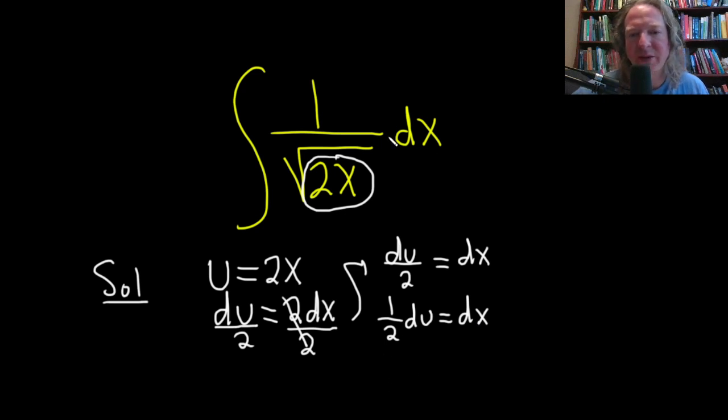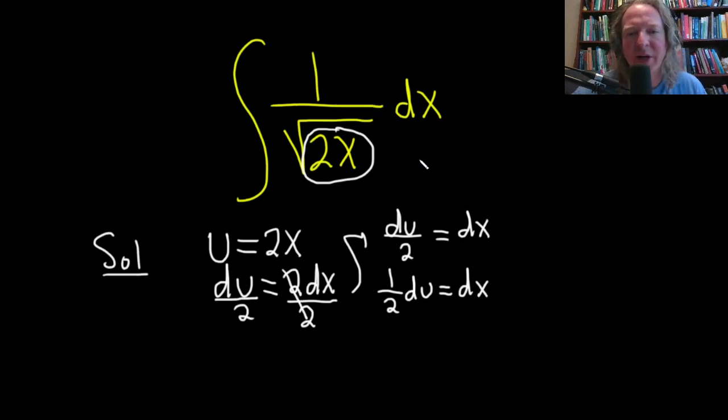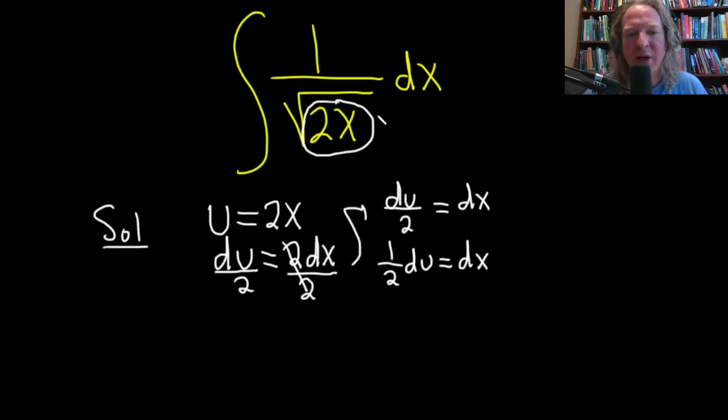So this is going to be equal to... Let's go ahead and make our substitution. We have on the bottom here, 1 over the square root of u. That's just replacing this. And then the dx is 1 half du.